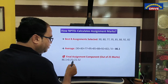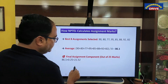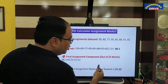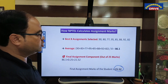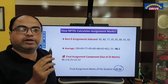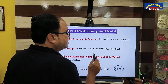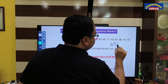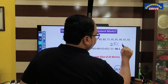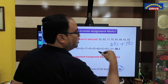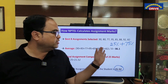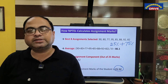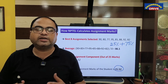We want the marks out of 25 for the assignment component, which is why we multiply the average by 0.25. The final assignment marks of the student are 21.52 out of 25. This is how NPTEL calculates your final assignment marks. We should not be confused about why 86.1 becomes 21.52 — NPTEL considers assignments for only 25 percent of the marks, with the remaining 75 percent for the final exam. This is how the final marks for a 12-week course are calculated by considering the best eight assignments. See you soon, everybody — take care.